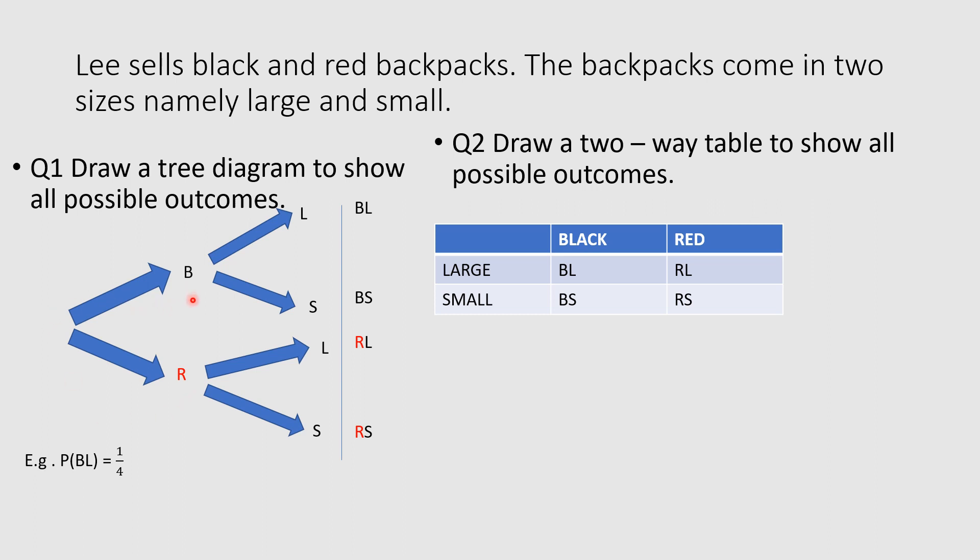Now, if I decide to go with the black backpack, again I have two options. So there's two branches: I can either go with large or small. If I decide to choose the red backpack, again I have two options, either large or small.